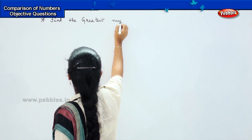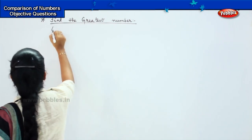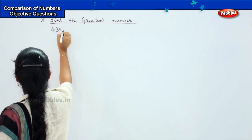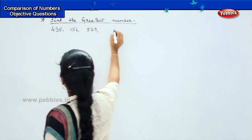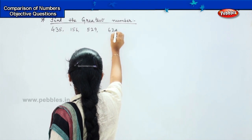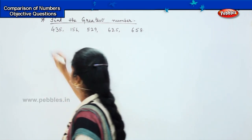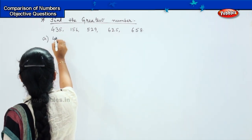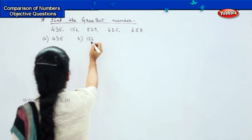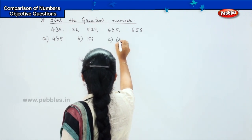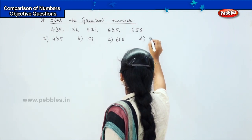Your options are 435, 156, 529, 625, and 658. Option A is 435, option B is 156, option C is 658, and option D is 529.